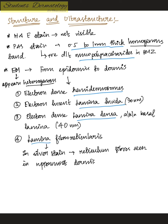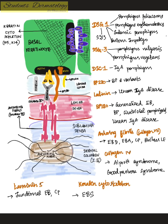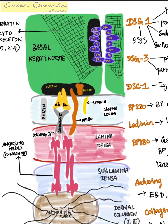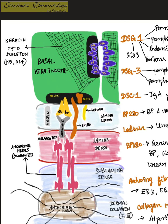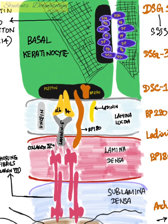The third structure is the electron-dense lamina densa, otherwise called the basal lamina, around 40 nanometers in diameter, and then the lamina fibro-reticularis, which is visible in silver stain. The basal keratinocyte contains keratin filaments, and the keratin proteins present here are keratin 5 and keratin 14.